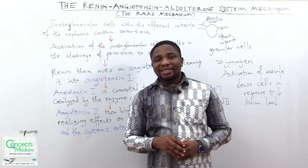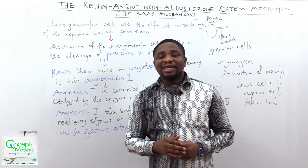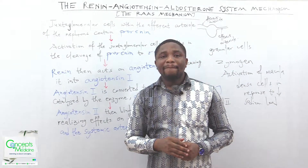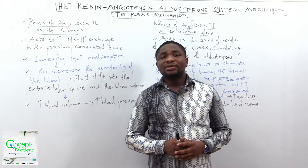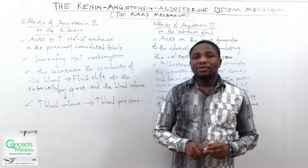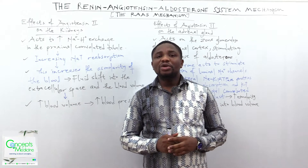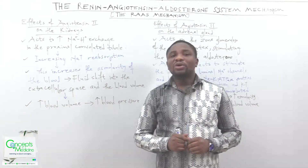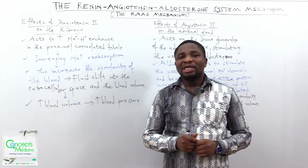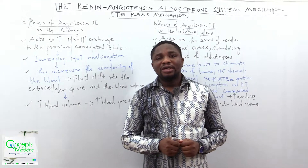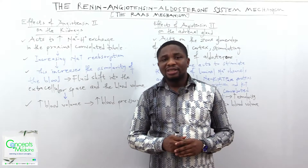Let's talk about the effects of angiotensin-2 on the kidneys. Angiotensin-2 acts to increase sodium-hydrogen exchange at the proximal convoluted tubule, resulting in increased reabsorption of sodium. Increased sodium reabsorption increases the osmolarity of the blood, causing fluid shifts into the extracellular space as well as the blood volume, which in turn increases blood pressure.